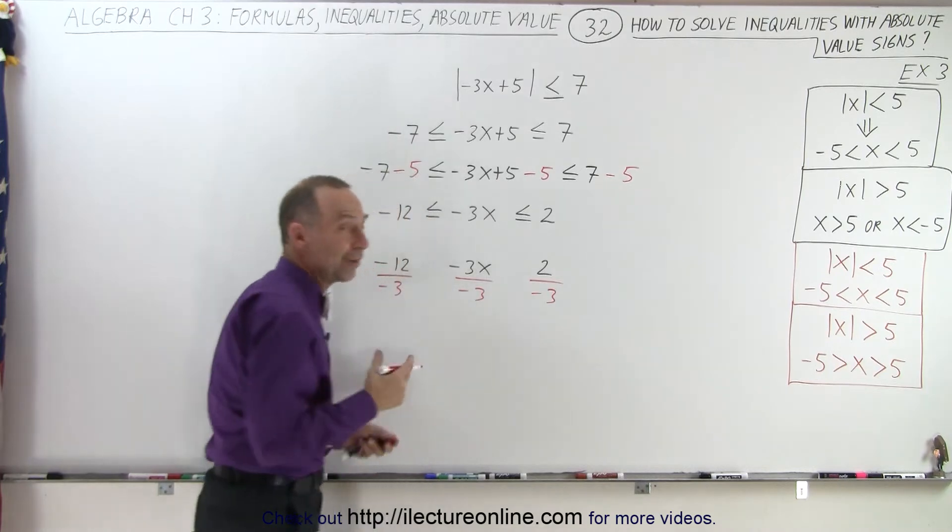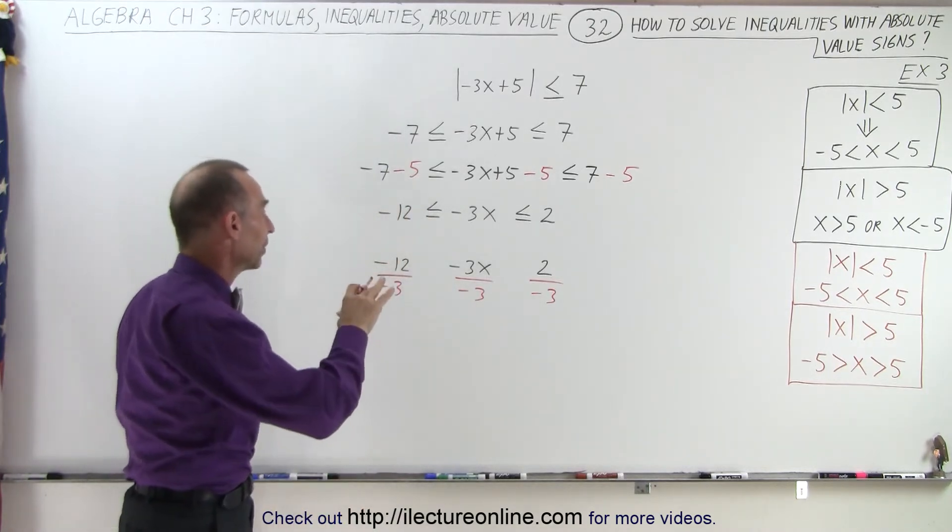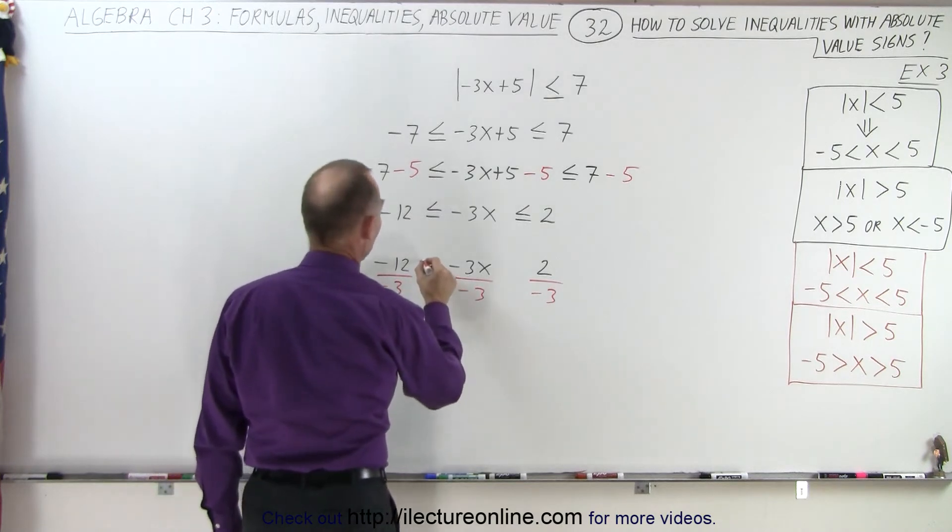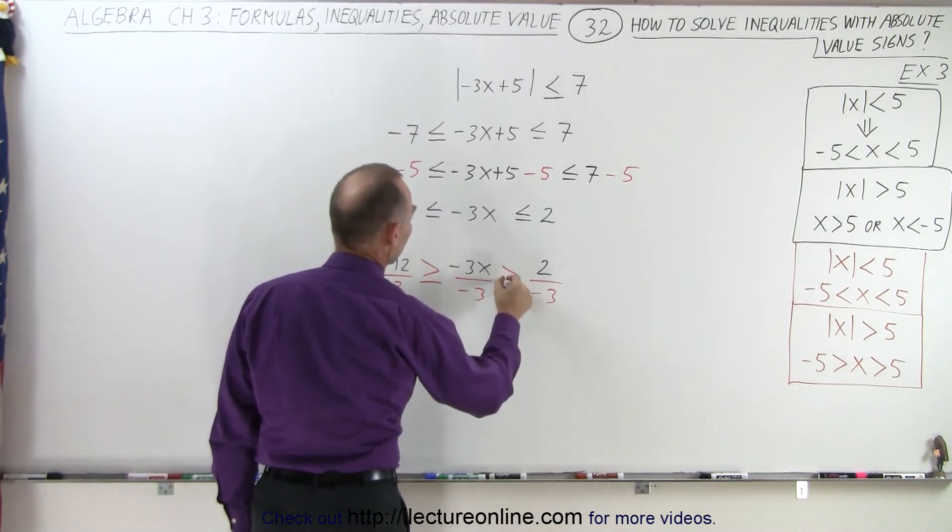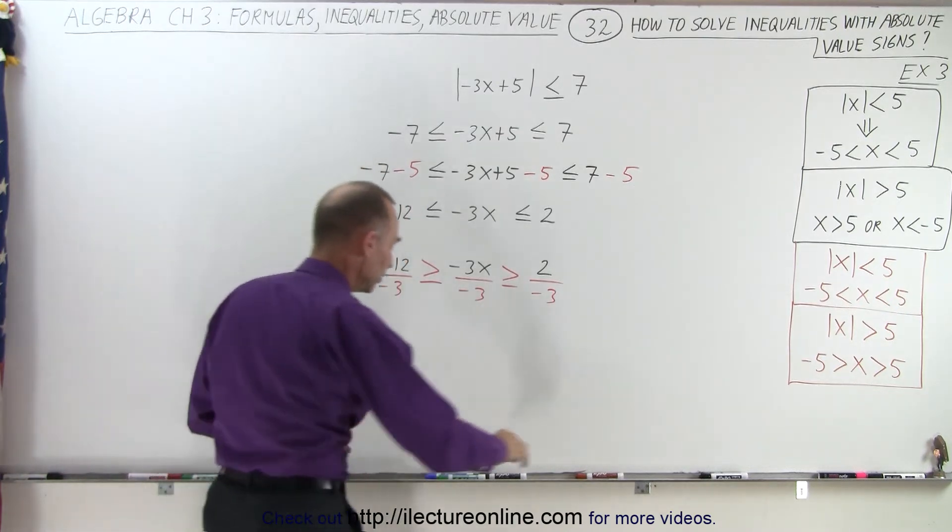And since I'm dividing every portion of that inequality by a negative number, I have to flip the inequality signs around. So this becomes greater than or equal to, greater than or equal to, instead of less than or equal to. And now we can continue.